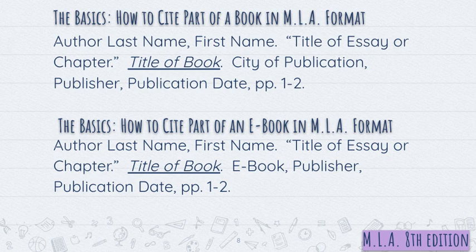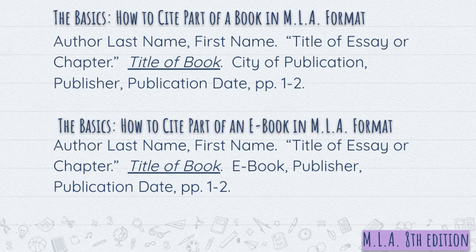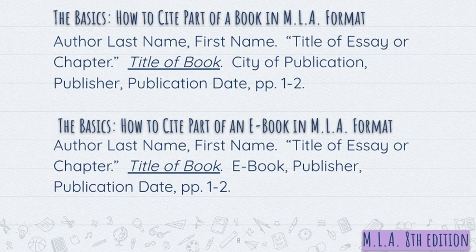Like we talked about in the last lesson, you don't have to read an entire book — you may use just a chapter or a section. If you're going to cite part of a book, put the author's last name, a comma, their first name, a period, space. Then in quotation marks, put the title of the essay or the chapter from the book, period, end quotation mark, space. Put the title of the book in italics, or if you're handwriting, underline it, period. Then the city of publication, comma, the publisher's name, comma, the publication date, comma. And then you also need to list the page range — what pages is this chapter found on in this book? So you put pp., space, and then the page range, such as 1-2, period, or whatever pages it is found on.